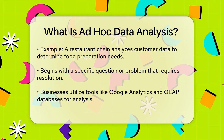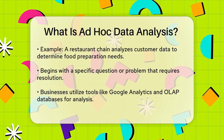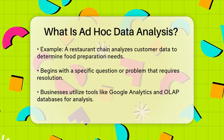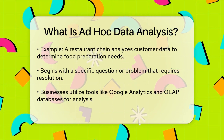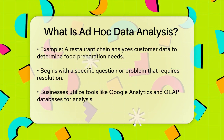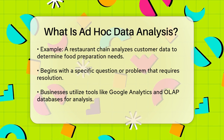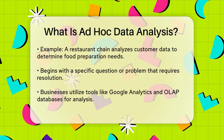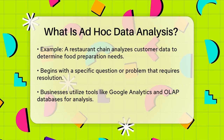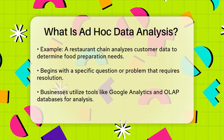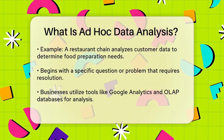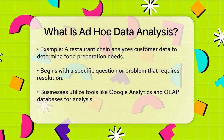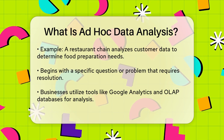Here's how it works. Ad hoc analysis starts with a specific question or problem that needs solving. For example, a grocery store might want to know which items are selling well and which need more inventory. They use business intelligence tools connected to various data sources, including internal databases and sometimes external sources like big data, to find the answers.